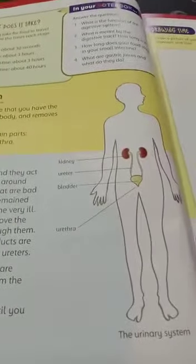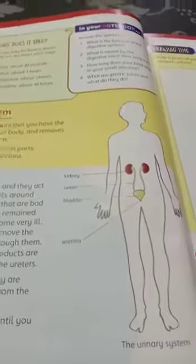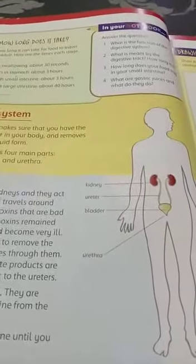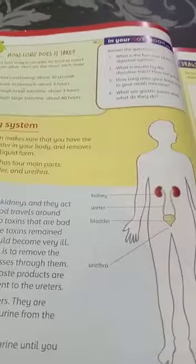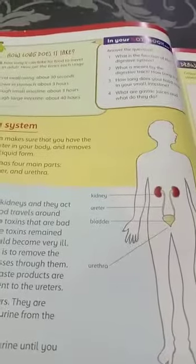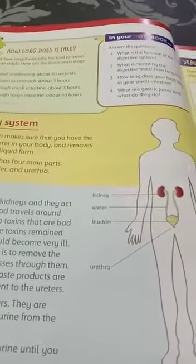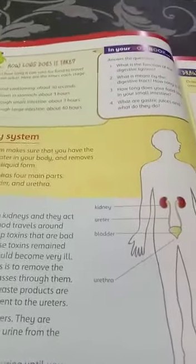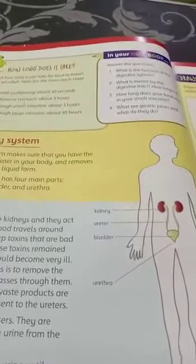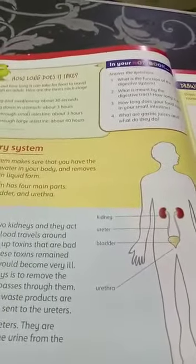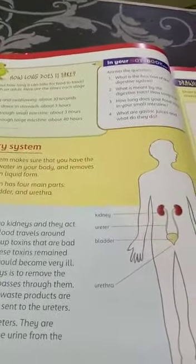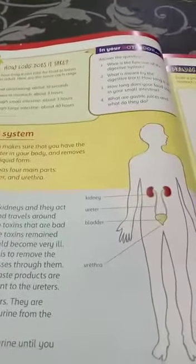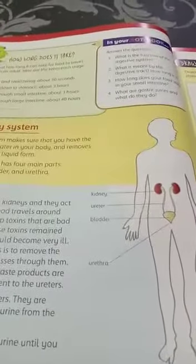One more thing: there are two kidneys in every adult human, but you can live a normal life with just one kidney as well. Some people may have both kidneys damaged and can get a kidney transplant and live a normal life. Thank you.